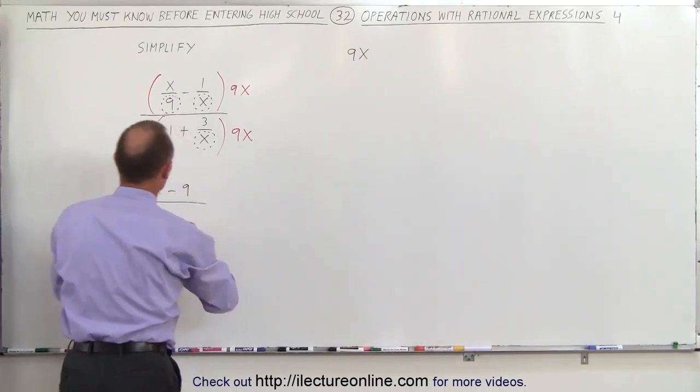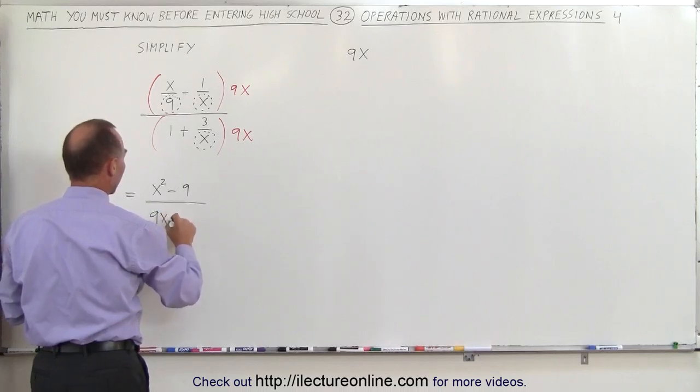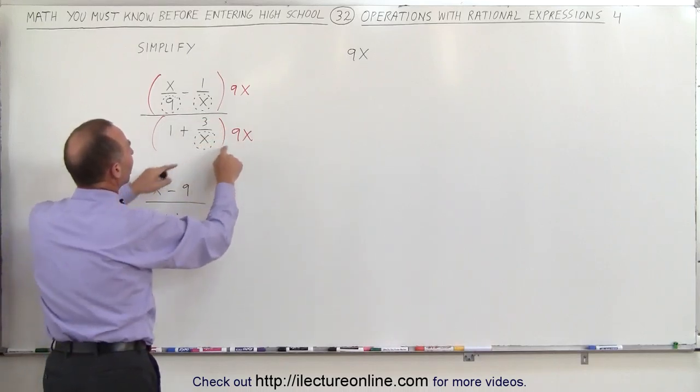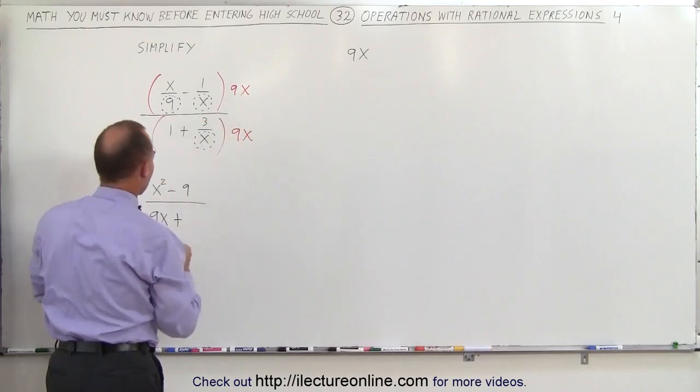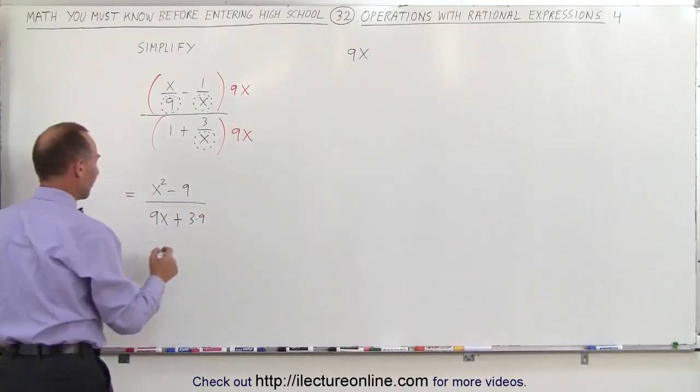In the denominator, 1 times 9x gives you 9x plus 3 divided by x times 9x, the x's cancel out and you end up with 3 times 9.